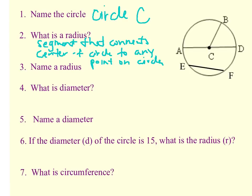If we want to name a radius, all we have to do is use the center point and the segment endpoint which is on the circle. So for example, CA would be a radius, CB would be a radius, CD would also be a radius. Any of those would be acceptable.